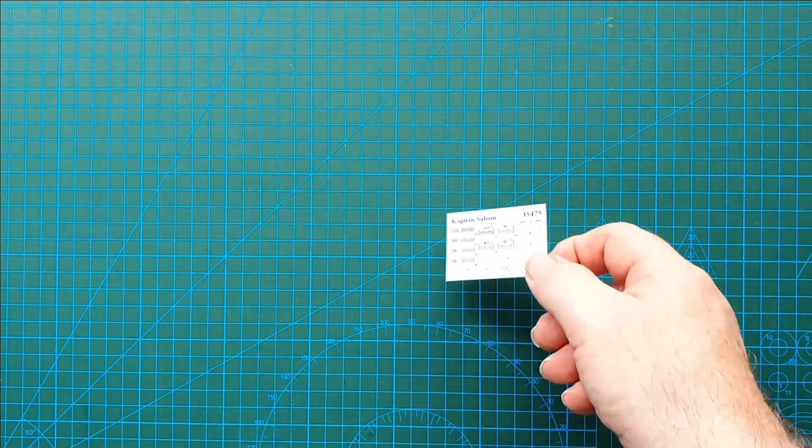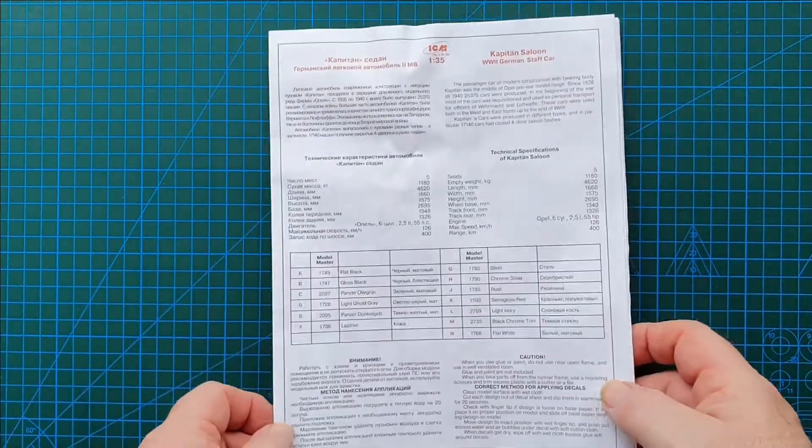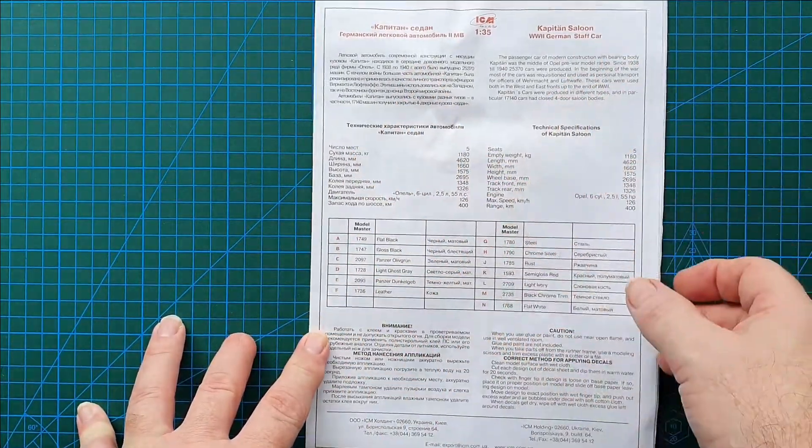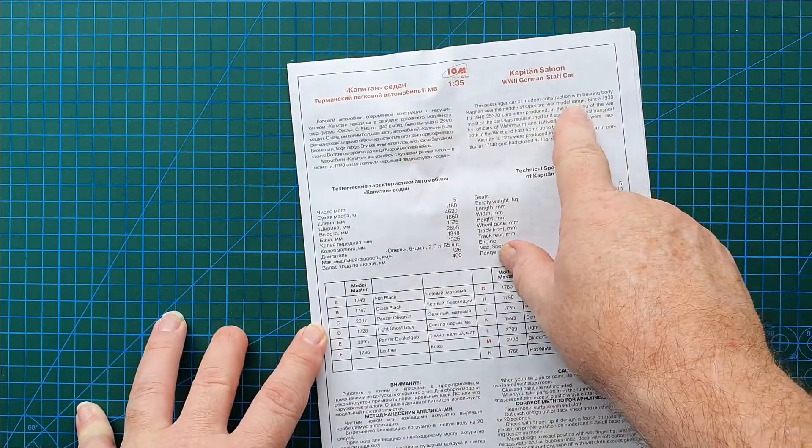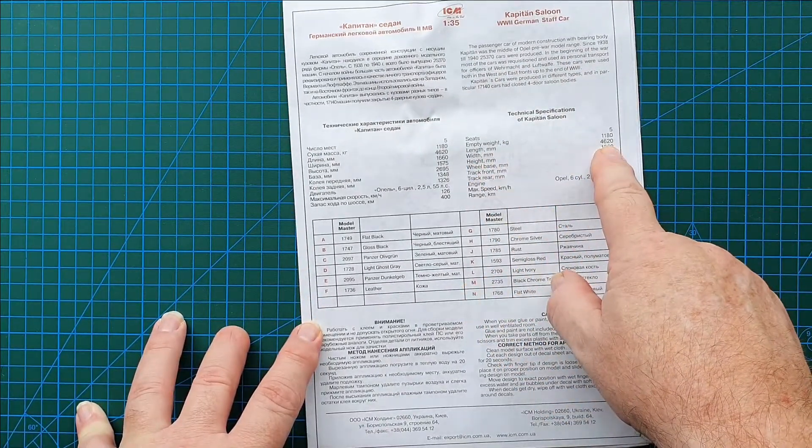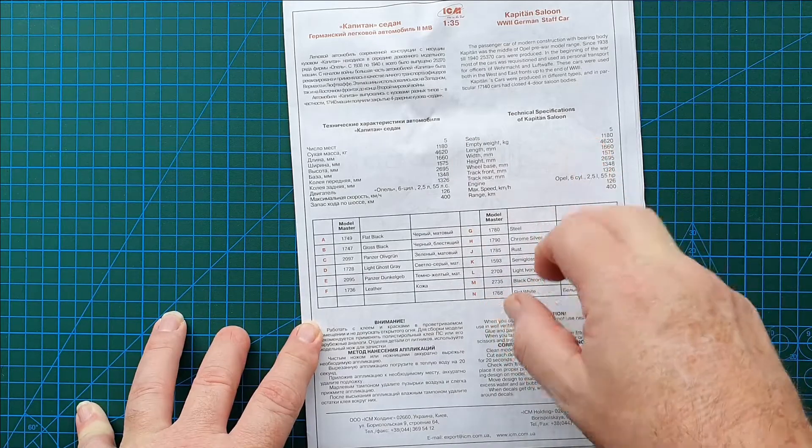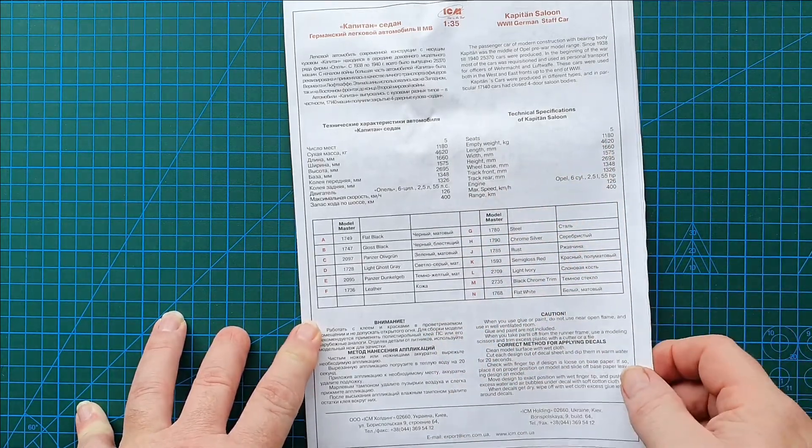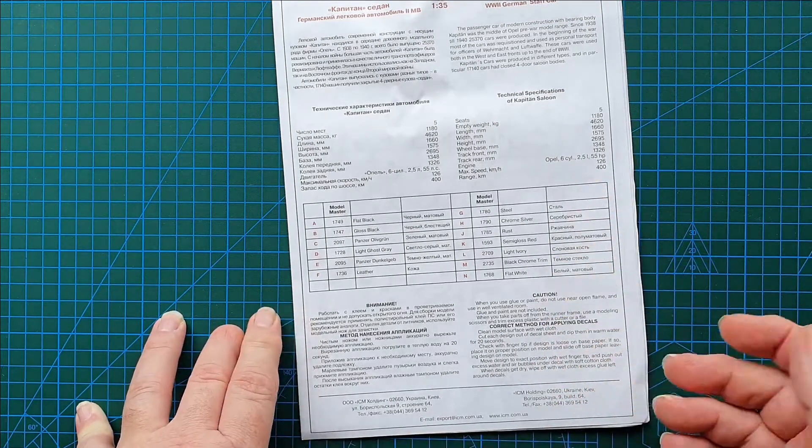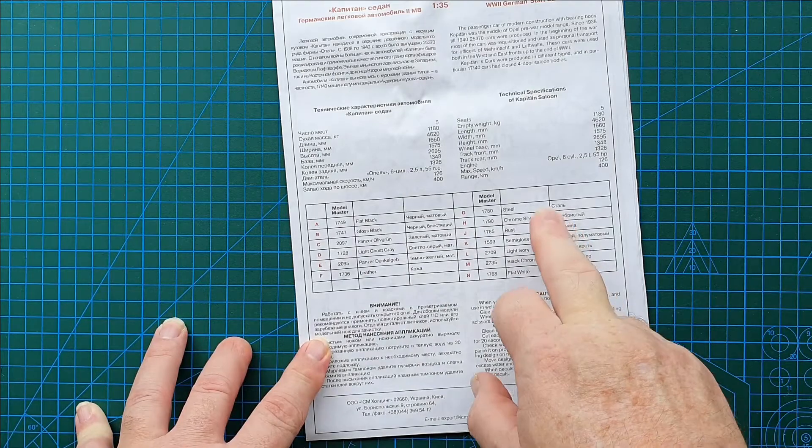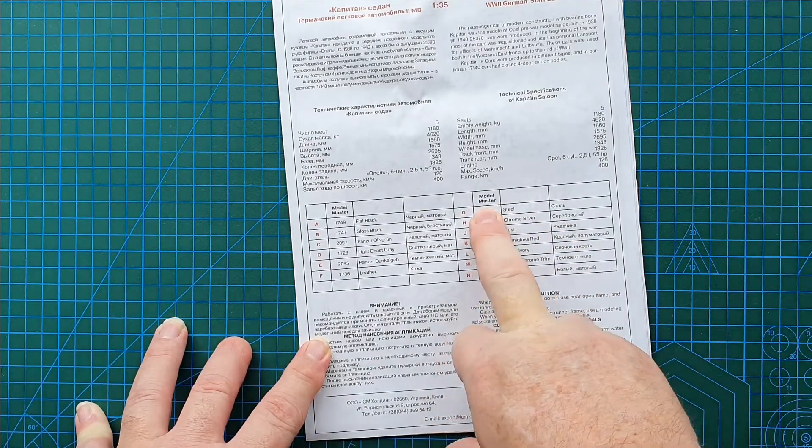Let's have a look at the instructions first. In Ukrainian and English you have brief history of the vehicle, technical specifications, what its weight was, maximum speed 125 kilometers an hour on the road. Range 400 kilometers, that's not too bad. Color call outs here are purely in Model Master colors.